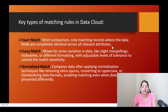Fuzzy match allows for some variation in data, like slight misspellings, nicknames, or different formatting, with adjustable levels of tolerance to control the match sensitivity. So fuzzy means it will have slight variations, whereas exact means it has to match exactly.